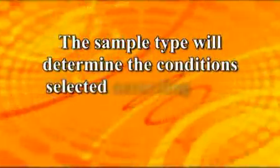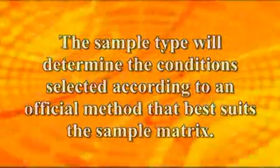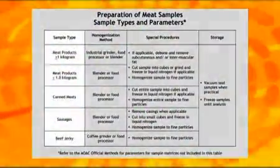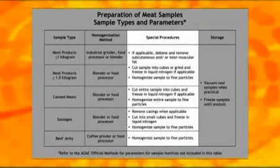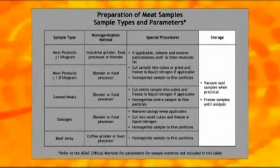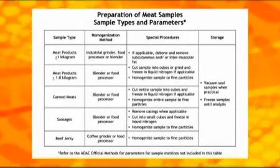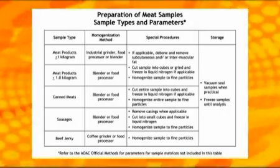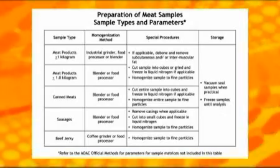Determine what type of sample must be homogenized. The sample type will determine the conditions selected according to an official method that best suits the sample matrix. This chart details various types and sizes of meat samples and specific suggestions for the appropriate preparation, homogenization method, and storage of each type and size of sample. The variables listed may be adjusted, if necessary, to accommodate the sample and to correspond with similar official methods better suited for the sample matrix.